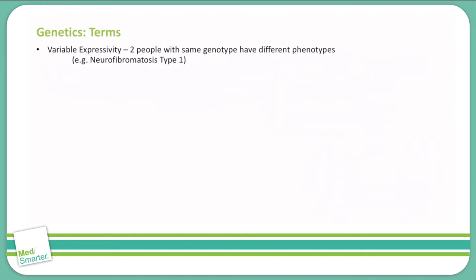Variable expressivity is where two people have the same genotype but different phenotypes. An example of that is neurofibromatosis type 1, where you see varying severity of the disease. Some may have small or large café au lait spots, and they may or may not have any cutaneous neurofibromas — that is just due to the variable expressivity of that disease.